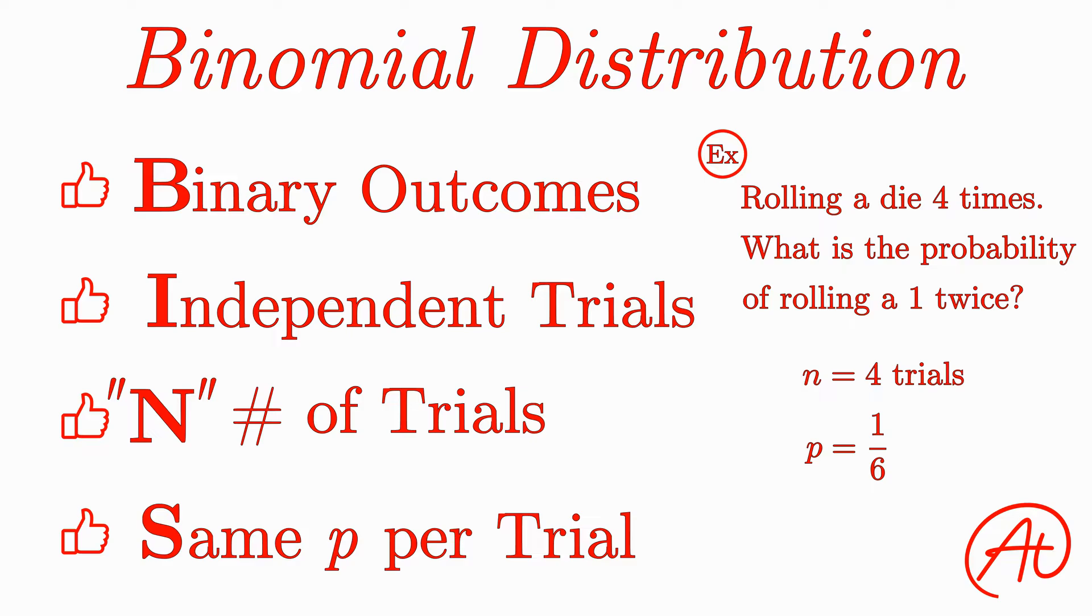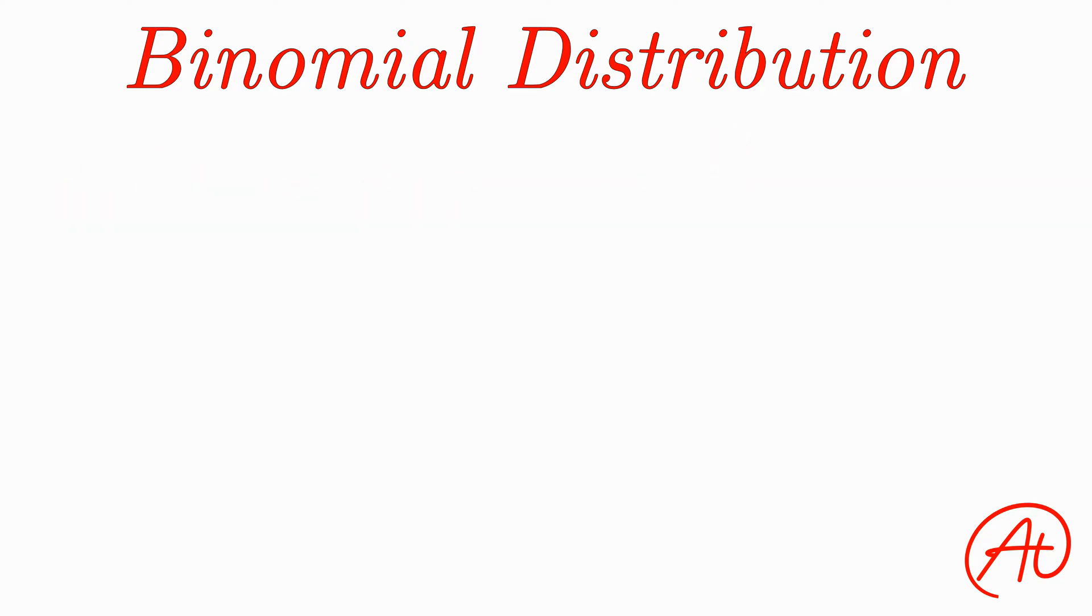Now that we covered what makes something a binomial distribution, let's go over some properties of this distribution. First, the mean or expected value. For the binomial distribution, the mean, mu, is pretty simple and equals n times p, where n is the number of trials for the experiment, and p is the probability of success for each trial.